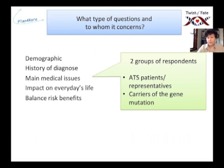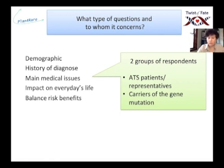How are we going to do that? We are going to send you questionnaires and ask a lot of questions to gather everything. The questions will cover demographic information, history of diagnosis, main medical issues, the impact on everyday life, and the balance between risk and benefits. We are going to ask two groups of people: ATS patients or their representatives, and the carriers of the gene mutation.